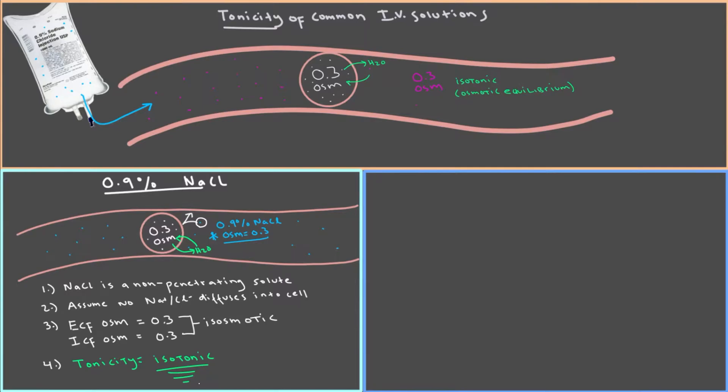And this is why this solution is so common in the clinic. Because you can give this to somebody and theoretically, it should not cause their cells to gain water or lose water. Their cells will be perfectly happy and you can give them fluid, you can give them sodium and chloride, but their cells won't swell up or shrivel due to water loss or gain. It's an isotonic IV solution.